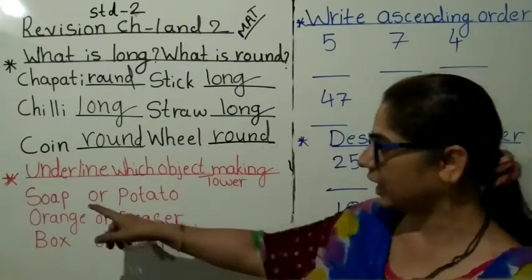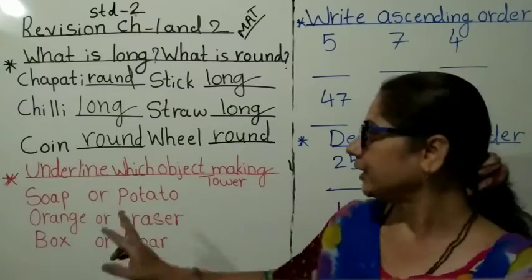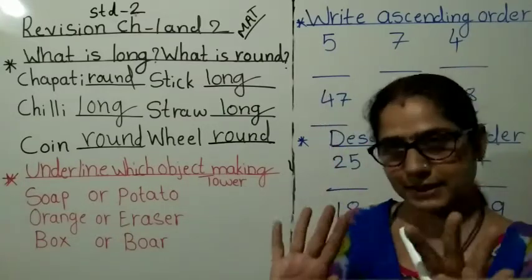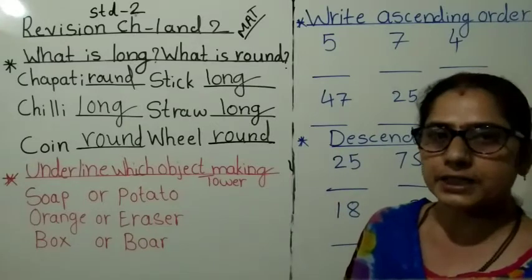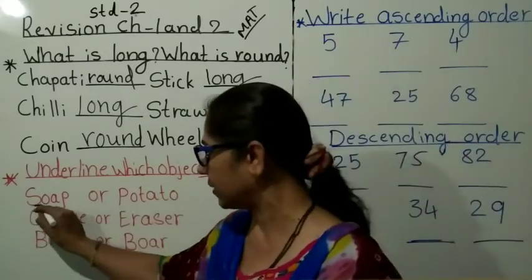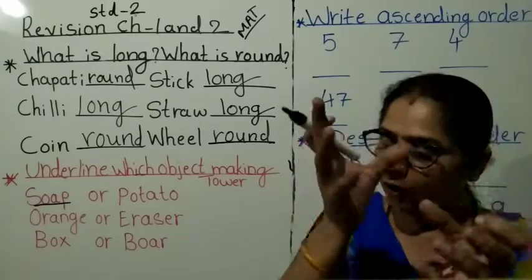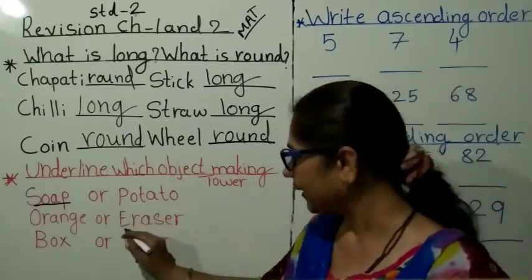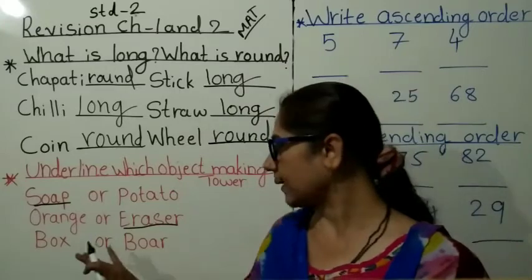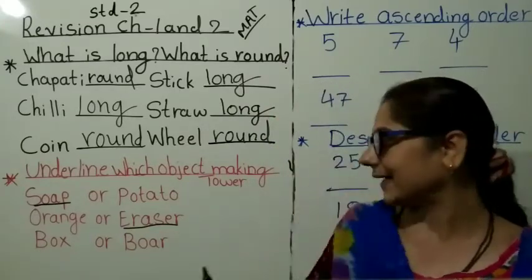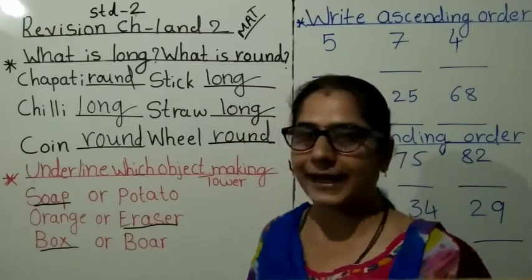Just you see here student, underline करना है tower. क्या चीज़े बनते हैं - not making: क्या होए, नहीं बनते हैं. Making tower: क्या चीज़े होसे देखना है. Soap, S-O-A-P, soap or potato - किस में से tower बनते हैं? Yes, soap. Very good. Now next - orange और eraser. Orange and eraser कैसे होते हैं? Now box or board. Box होता है, board होता है. Board means गुल-गुल होता है, that's why it is not possible. Box making tower, that's why here underline. Understood?